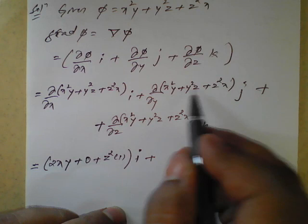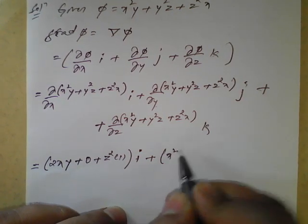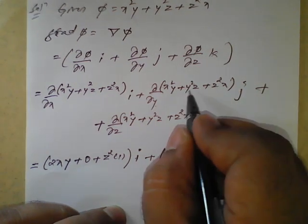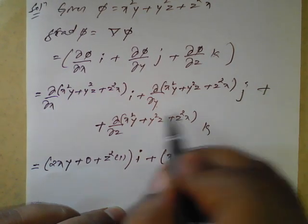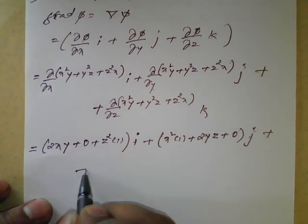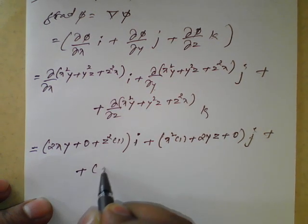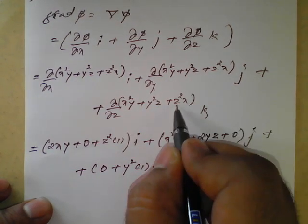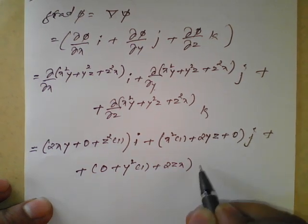Next, dou by dou y: with respect to y we treat x and z as constants. x squared is constant, partial derivative of y with respect to y is 1, giving x squared. Partial derivative of y squared is 2y, and z is constant. z squared x is purely constant with respect to y, giving 0. So the j term gives (x squared + 2yz) of j. For the third term, with respect to z: x squared y is purely constant giving 0; y squared is constant, partial derivative of z with respect to z is 1 giving y squared; partial derivative of z squared with respect to z is 2z, and x is constant. So the k term gives (y squared + 2xz) of k.